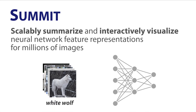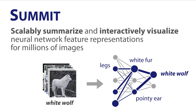Consider the white wolf class that by itself contains hundreds of images. In SUMMIT, we create attribution graphs by passing all the data through the network to determine the top activated neurons and influential paths. Attribution graphs tell us what features a network is detecting and how those features are related.